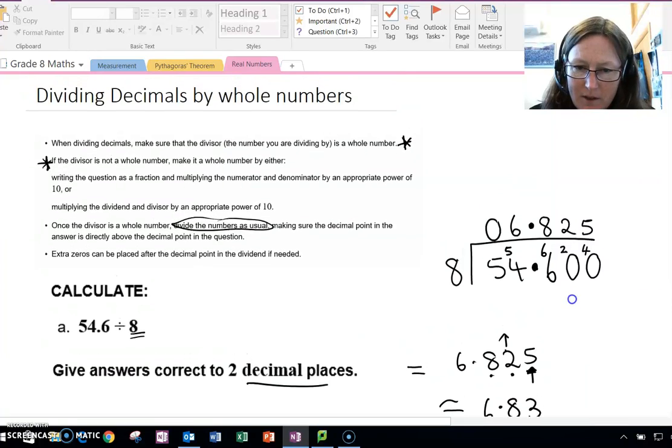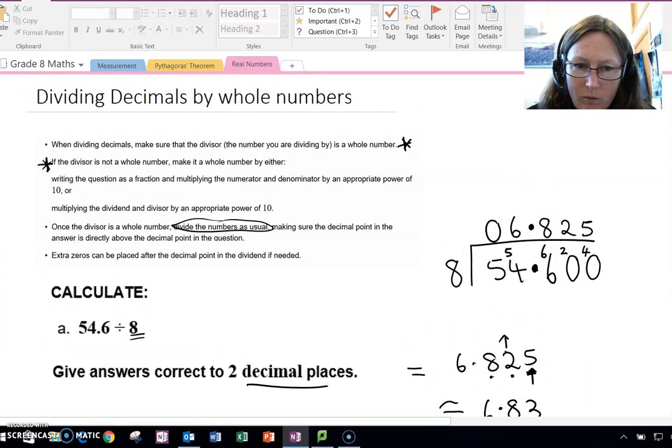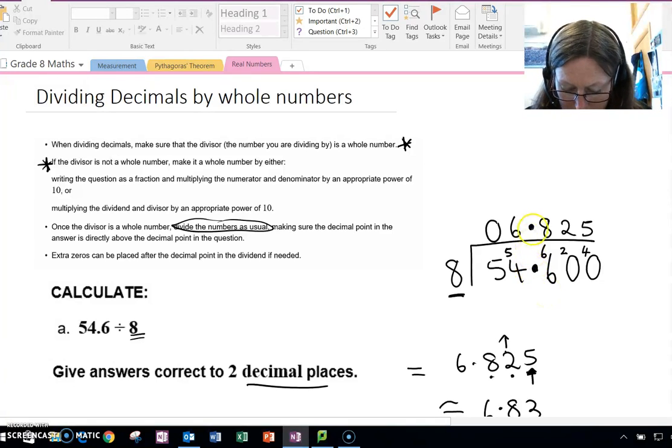So going back over the steps, when we are dividing by a whole number, we divide the numbers as usual, and then because we're dealing with decimals, the new thing that we're learning is in the answer, the decimal point is directly above where the decimal point was in the question.